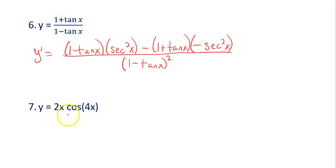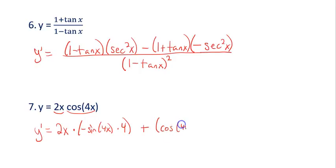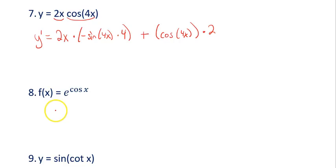Example 7 is a product rule because the 2 has an x with it, making it a product of two things with variables. So 2x is the first piece and cosine of 4x is the second piece. The derivative is: first times the derivative of the second — derivative of cosine of 4x is negative sine of 4x, then chain rule gives times 4 — plus the second times the derivative of the first, which is 2. Put them in parentheses to keep multiplication and signs organized.